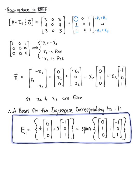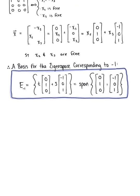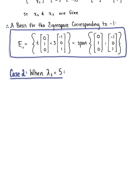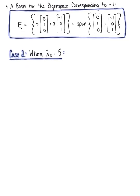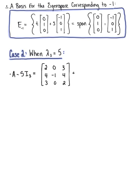Now that we have found this eigenspace, we are ready to consider case 2, where lambda sub 3 equals 5. The first thing we need is matrix A minus 5 times the 3 by 3 identity. Matrix A is [[2,4,3],[0,-1,0],[3,4,2]], and we add the diagonal matrix with -5 entries. Combining like terms gives the matrix [[-3, 4, 3], [4, -6, 4], [3, 0, -3]].